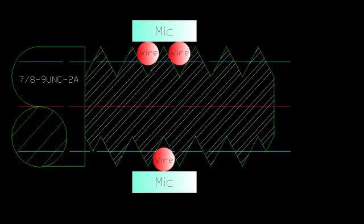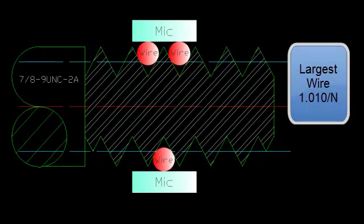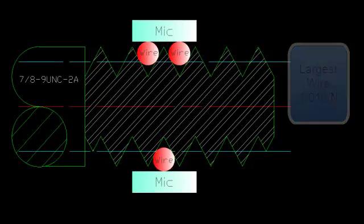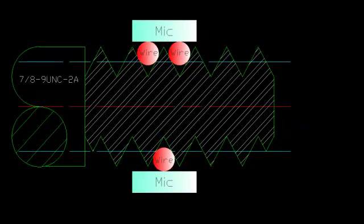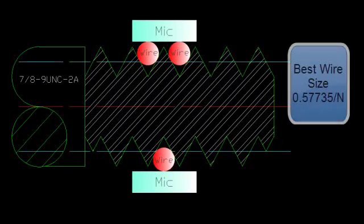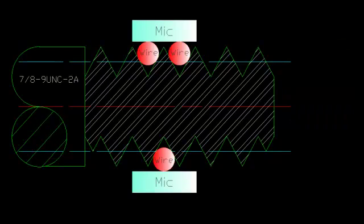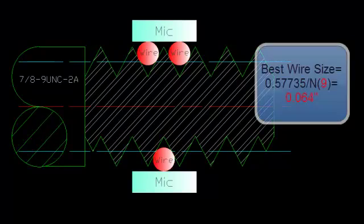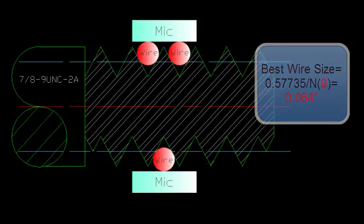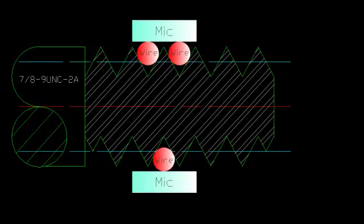Now in order to choose the wire for this thread to measure it, there's a couple of formulas. The largest wire we can use is 1.010 divided by the number of threads per inch. The smallest wire is 0.505 divided by the number of threads per inch. In a perfect world, the wire we would choose is 0.57735 divided by the number of threads per inch. If we use that calculation, the best wire would be 64 thousandths of an inch in diameter. We would choose three wires that are 64 thousandths of an inch in diameter.